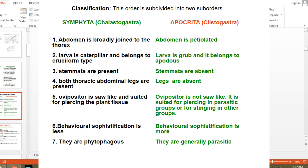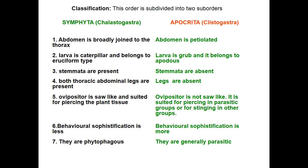Second difference: in Symphyta the larvae are caterpillar-like, having both thoracic and abdominal legs — eruciform or polypod type. In Apocrita, the larvae are grubs — apodous, without legs. Third: in Symphyta larvae, stemmata (larval vision organs) are present, but in Apocrita grubs, stemmata are absent.